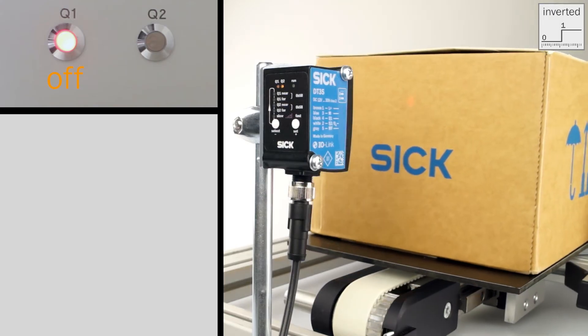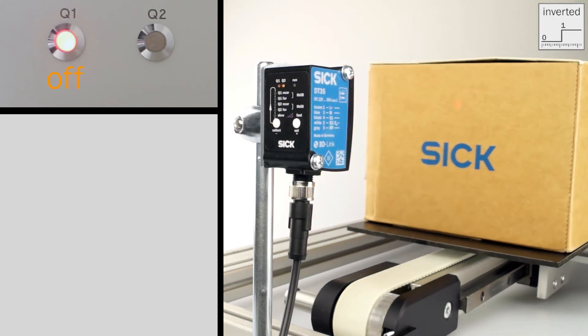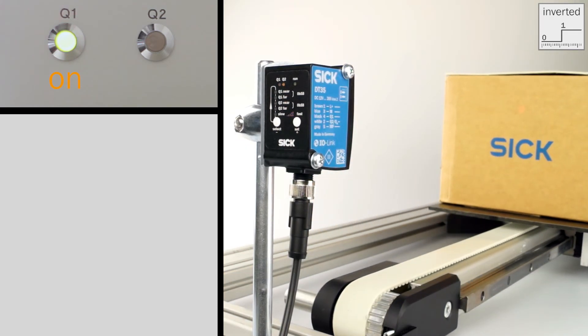Now you can see the switching point of the output Q1. It switches when the object is further away than the taught in distance.